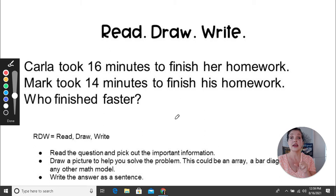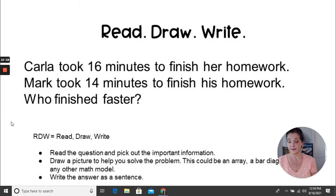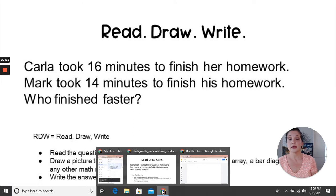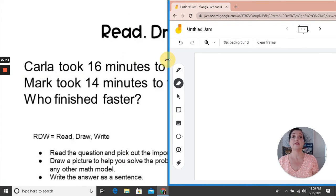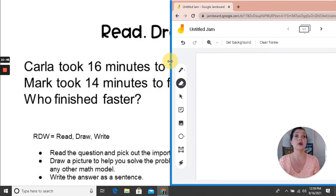Okay, so we've read the question and picked out the most important information. Next we need to draw a picture. So I think I'll use a number line for my picture. So I'll click done there and I'm going to go over to a Google Jamboard. A Google Jamboard is just like a whiteboard. If you have a whiteboard or a piece of paper or even a Google Jamboard, you could do this part with me.